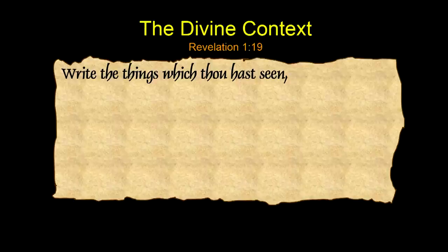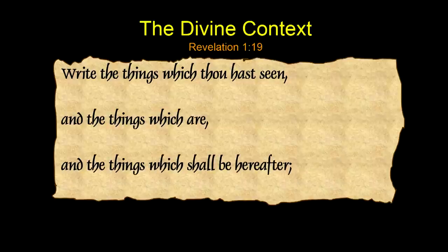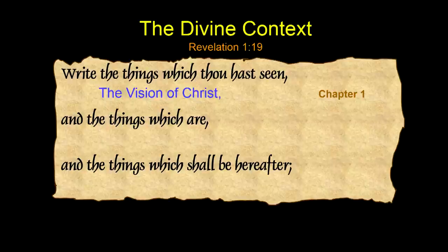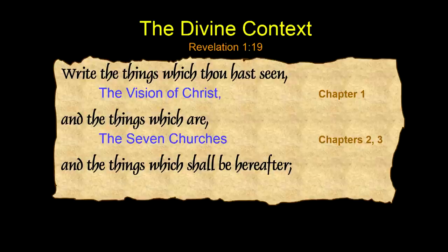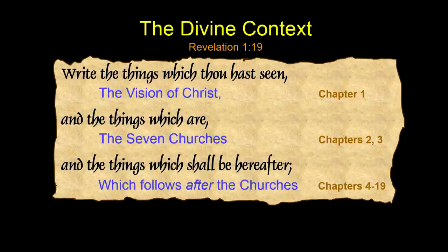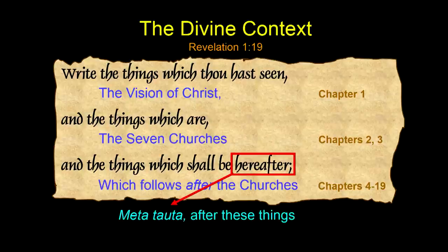The book of Revelation has its own outline in verse 19 of chapter 1, where John is instructed to write the things which thou hast seen, and the things which are, and the things which shall be hereafter. Those are three sections that profile the entire book. The things which are — the seven churches — actually existed at that time, present tense. And then we go to the things which shall be, metatauta, the things which follow the churches.